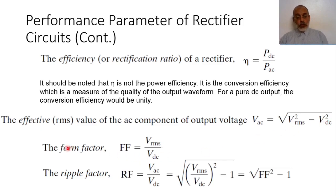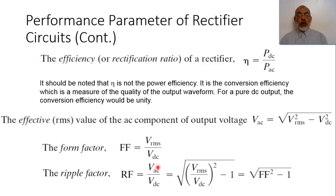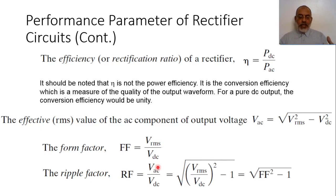The form factor is the ratio between the root mean squared voltage to the effective DC voltage. If we have an ideal constant DC, the root mean squared equals the DC itself, so the form factor is unity. But if we have some ripples, the root mean squared voltage is usually greater than the DC voltage, so the form factor for a practical case with ripples is usually greater than unity. The ideal best case is when the form factor equals 1, meaning the voltage is completely constant.